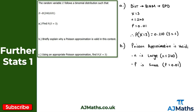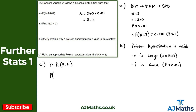For part c, we use the Poisson approximation to find the probability that x equals 3. I'll define a new random variable y which follows a Poisson distribution. The parameter lambda equals np: that's 240 times 0.01, which gives lambda equals 2.4. We're now looking for the probability that y equals 3.